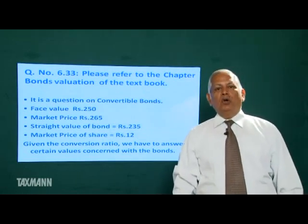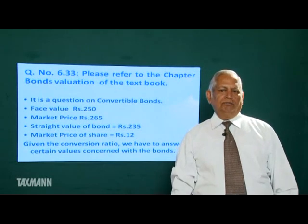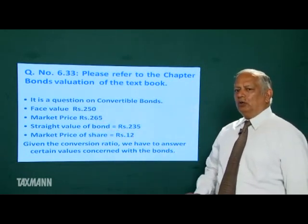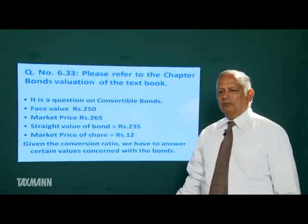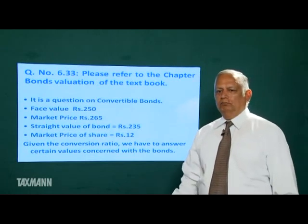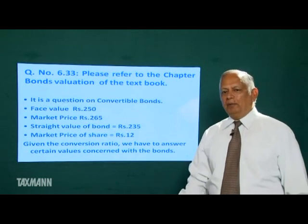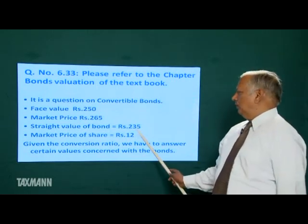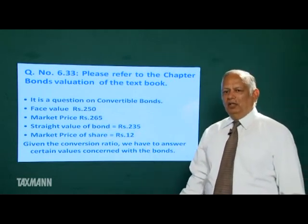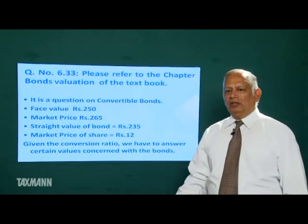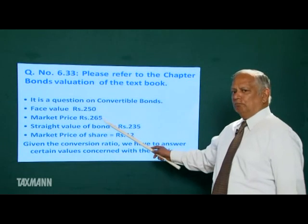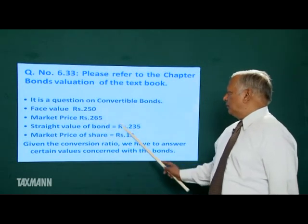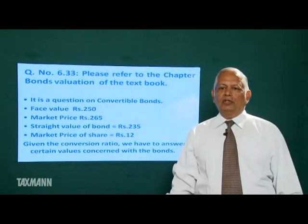Next, we find percentage downward risk. Today the market price of the bond is Rs. 265. If conversion is not feasible for any reason, the bond becomes like a non-convertible bond and its value will come down to Rs. 235 (the straight value). The difference — Rs. 30 — is the downward risk. Expressed as a percentage: Rs. 30 divided by straight value Rs. 235, multiplied by 100.